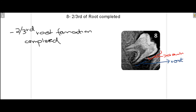At stage 8 the root formation is progressing and approximately two thirds of the root has now been formed, as you can see with this blue arrow. At this stage the crown is completed and root formation is two thirds complete, and the tooth starts to erupt in the oral cavity.